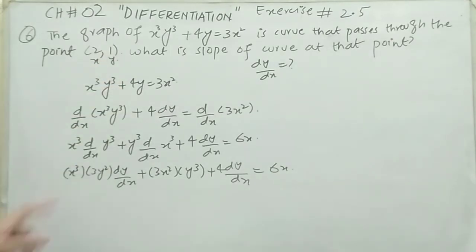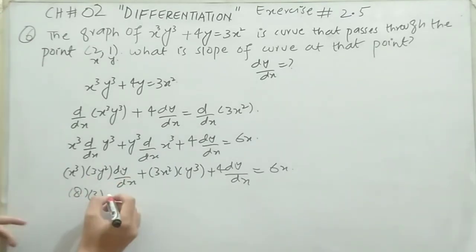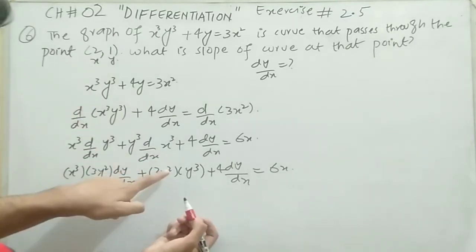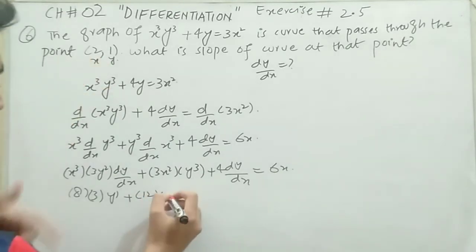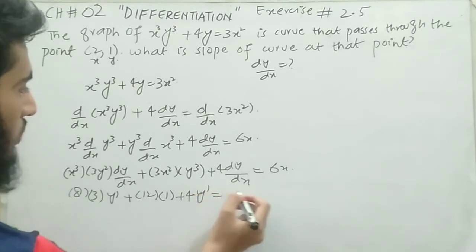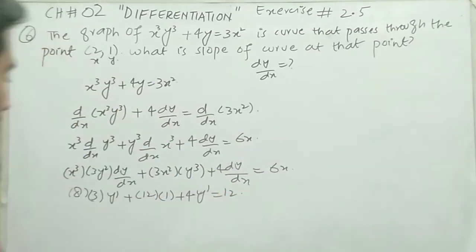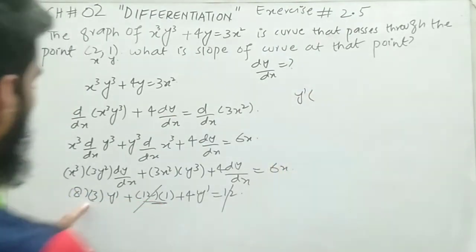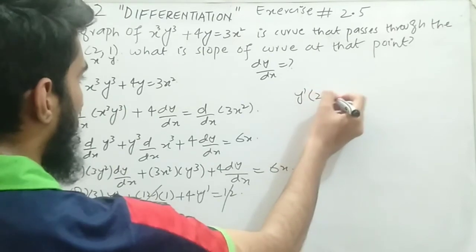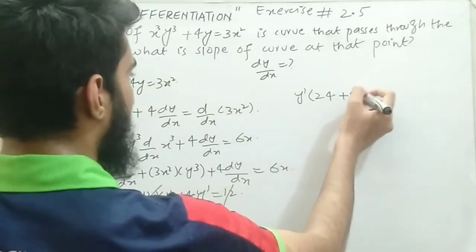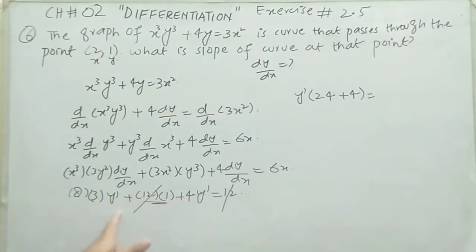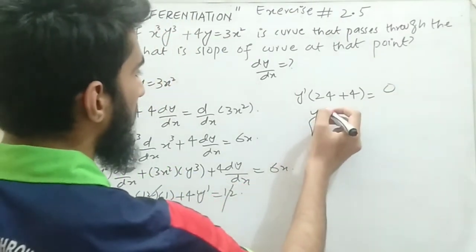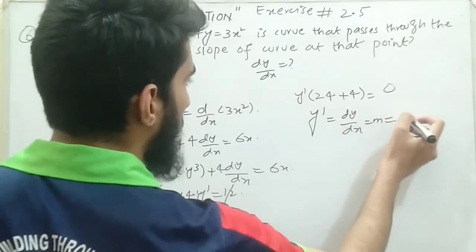Substituting x equals 2 and y equals 1: 2³ equals 8, times 1, gives 3 times dy/dx. Then 2² equals 4, times 3 equals 12, times y³ which equals 1, gives 12. Plus 4 dy/dx equals 6 times 2 which is 12. Since 12 appears on both sides they cancel, leaving zero on the right. Taking dy/dx common from the left: 8 times 3 equals 24, plus 4, so 28 times dy/dx equals 0. Therefore dy/dx equals zero, which is the required slope at the point (2, 1).